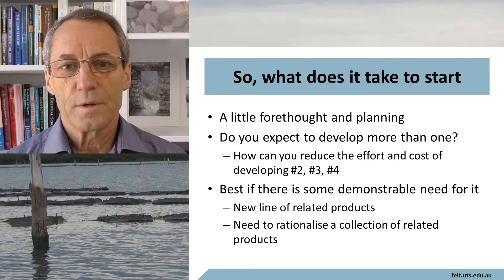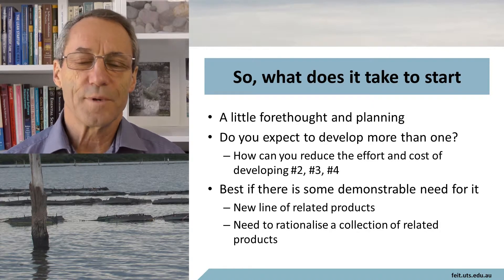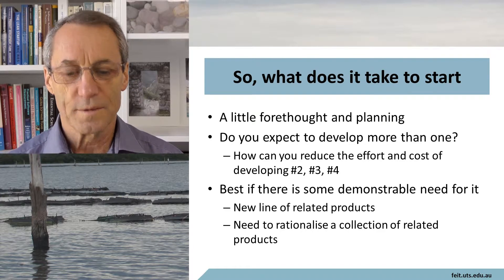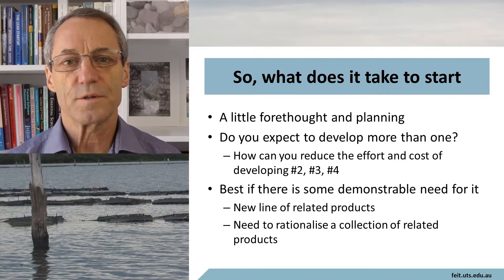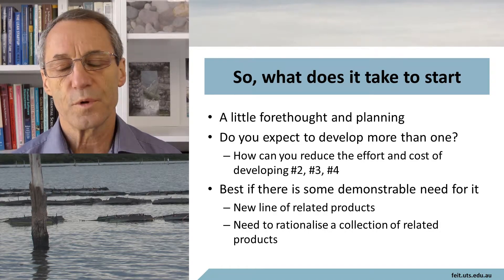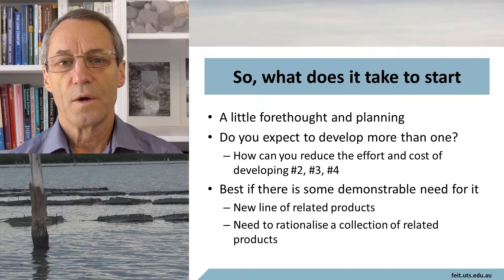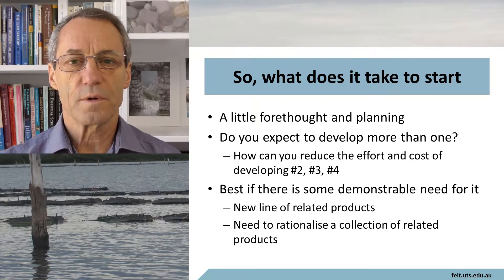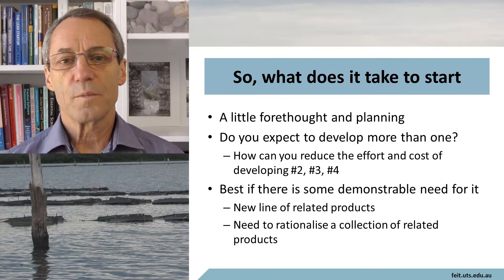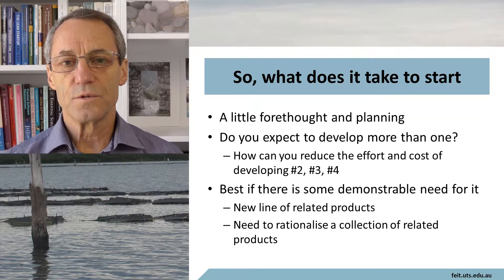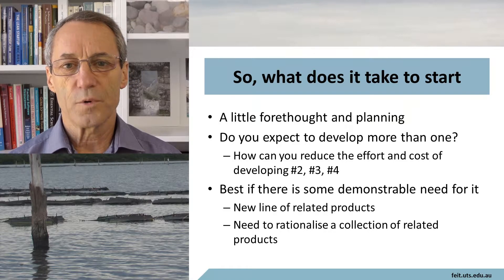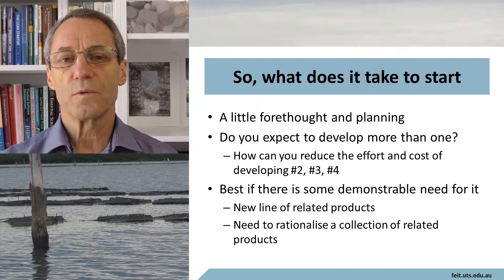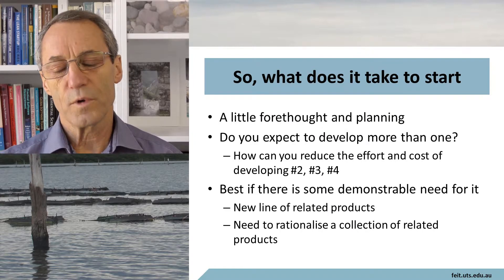What does it take to start building a product line architecture? Like most things, a little forethought and planning will go a long way. This question has been contemplated not only for product line architectures but also when object-oriented programming started — people began looking at how to make the objects they were developing reusable. The same kind of thinking goes for product line architectures: what do you have to do to make the architecture more general and more potentially reusable by related products?